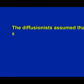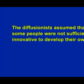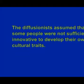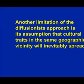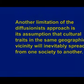Early diffusionists' views were based on erroneous assumptions regarding mankind's innovative capacities. Like the unilineal theorists, they maintained racist assumptions about the inherent inferiority of different non-Western peoples. The diffusionists assumed that some people were not sufficiently innovative to develop their own cultural traits. Another limitation of the diffusionists' approach is its assumption that cultural traits in the same geographical vicinity will inevitably spread from one society to another. However, anthropologists find that diffusion is not an inevitable process — societies can adjoin one another without exchanging cultural traits.